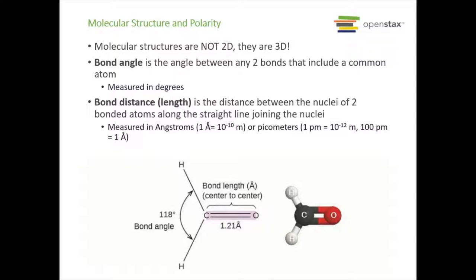First we need to talk a little bit about structures. We've been drawing Lewis structures for molecular compounds and at first glance it kind of seemed like something with four bonds is flat and has four right angles, but in reality molecular structures are not two-dimensional. They are three-dimensional and they have bond angles associated with them — the angle between any two bonds that have a common atom. For instance, formaldehyde has a bond angle between the two hydrogens where carbon is the central atom. This is measured in degrees.